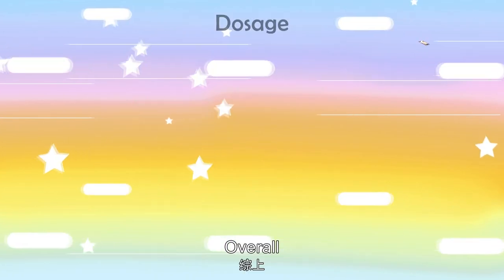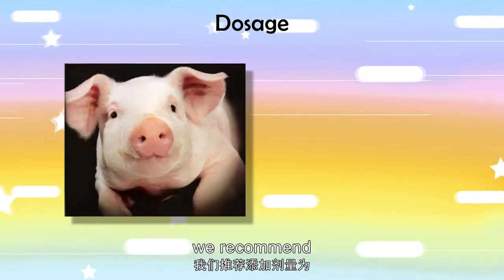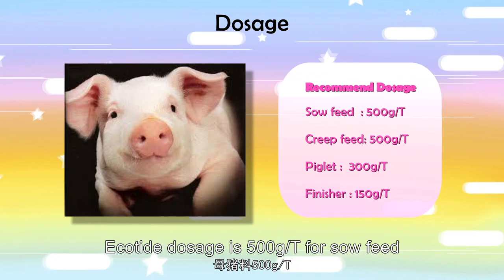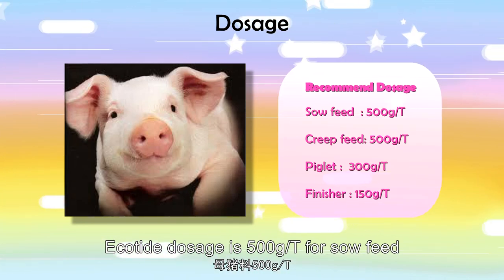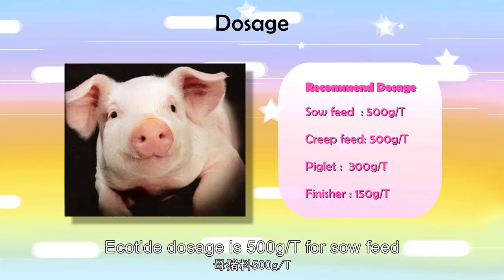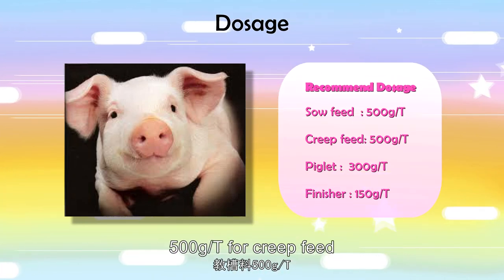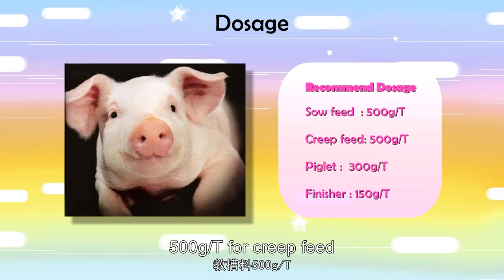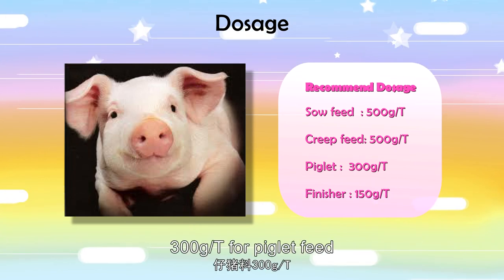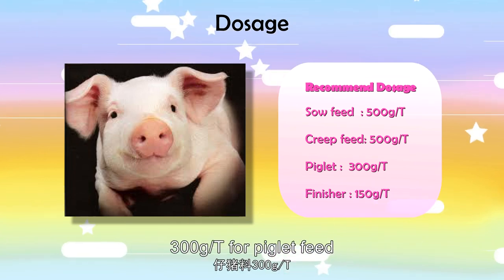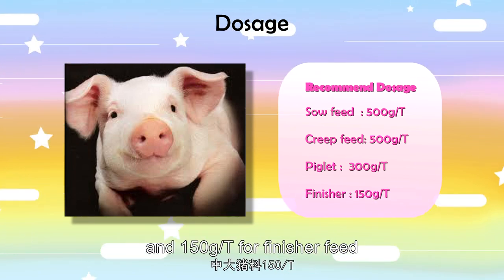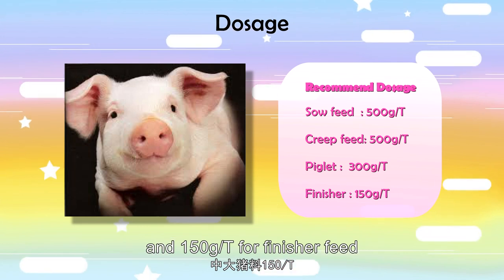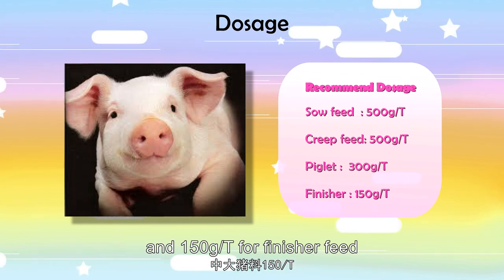Overall, the recommended Equotide dosage is 500 grams per ton for sow feed, 500 grams per ton for creep feed, 300 grams per ton for piglet feed, and 150 grams per ton for finisher feed.